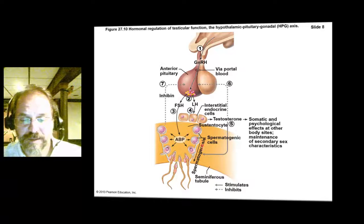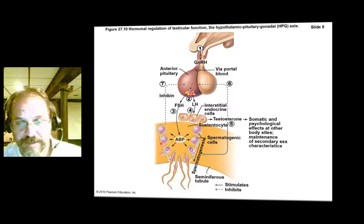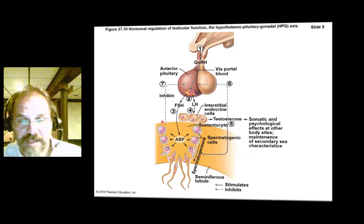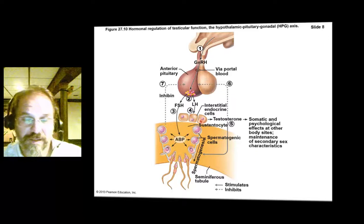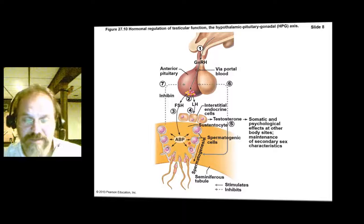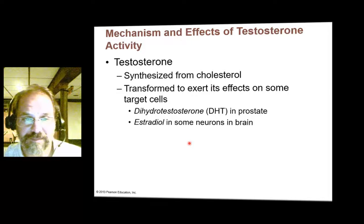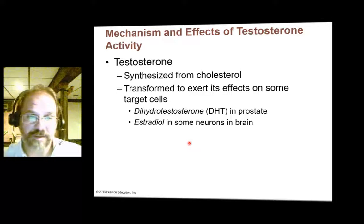As we stimulate spermatogenesis, we produce spermatids. The spermatocytes develop into spermatids and inhibin is produced. We also produce testosterone as a result of functioning Leydig cells. So testosterone and inhibin both have a negative feedback effect on the anterior pituitary. Testosterone is a steroid hormone synthesized from a cholesterol base.